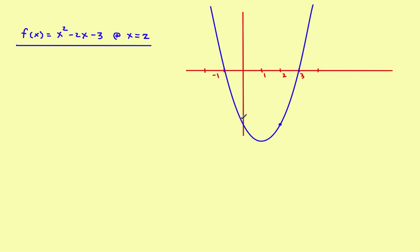Now graphically, if you graph the equation, this is what it would look like. The point that we're interested in comes over here when x is equal to 2 — if you come straight down to right here where this little blue dot is, that's actually the point that we want to know.